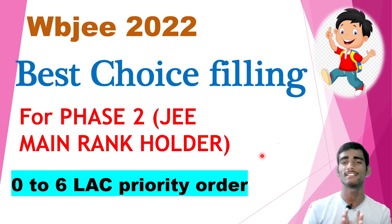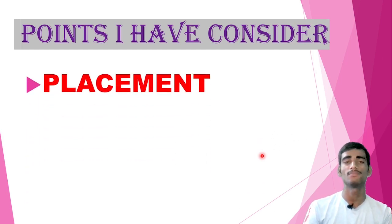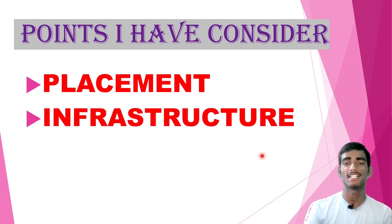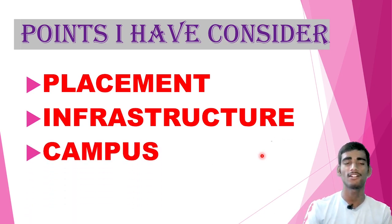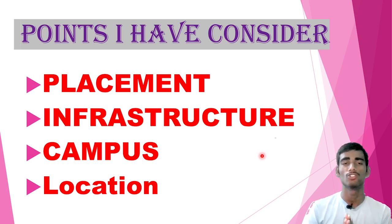I have done all the research and after that I am giving you the details. The points I considered in choosing this priority order include: first and very important — placement; then campus; and then location. I have considered these important criteria to give the priority order. Now let's talk about the list that I have filled up.